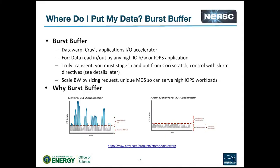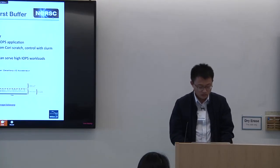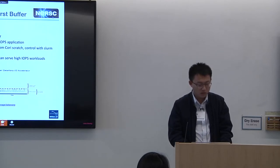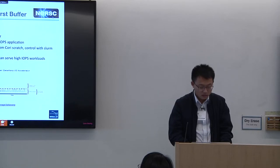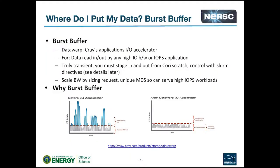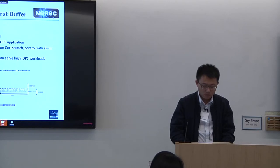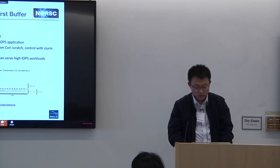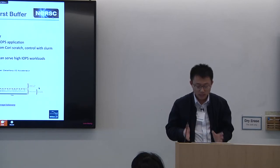Next, burst buffer. Burst buffer is designed to accelerate your IO and also to absorb burst IO requests. Without burst buffer or DataWarp as an IO accelerator, you typically see bursty IO patterns on HPC file systems — observable as spikes in IO activity. With burst buffer, we can absorb those bursty patterns and dramatically improve IO performance.